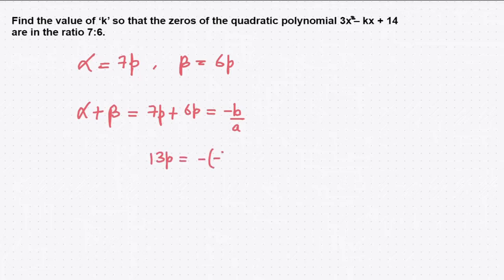It's -(-k)/a. How much is a? 3. So if you take 3 to the other side, it would be 39p is equal to k.